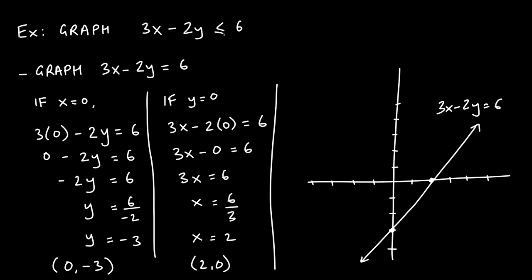Now let's look at an example with less-than-or-equal-to: 3x - 2y ≤ 6. The guidelines are the same. Since this equation is not in slope-intercept form, I'll find the intercepts to graph it. Setting x = 0 gives the y-intercept at (0, -3), and setting y = 0 gives the x-intercept at (2, 0). Connect those two points to get the line representing 3x - 2y = 6.